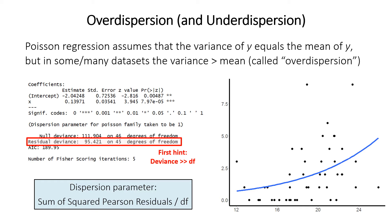What's the problem with over dispersion? It probably doesn't change the estimate, but what it really means is that the standard error is going to be underestimated — in many cases really severely underestimated if you have a lot of over dispersion. If you underestimate the standard error, the p-value ends up being too small, meaning your decision is much more likely to be a false positive with inflated type one error. Under dispersion would tend to do the opposite — lower deviance relative to degrees of freedom.